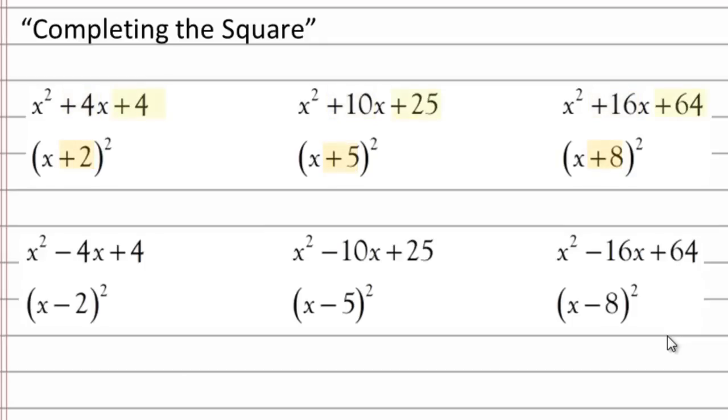We can also examine how those relate to our constant terms. So for example, 2² is 4, 5² is 25, and 8² is 64. Hopefully you'll notice that the third term of each of the trinomials is half of the b value squared.